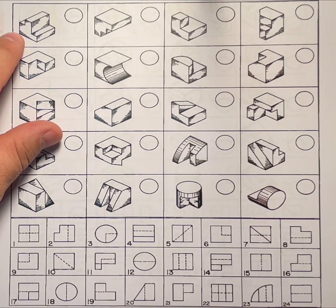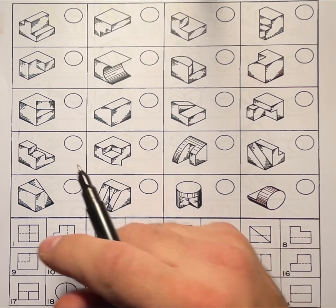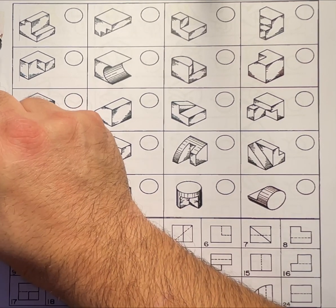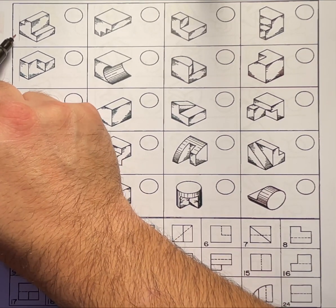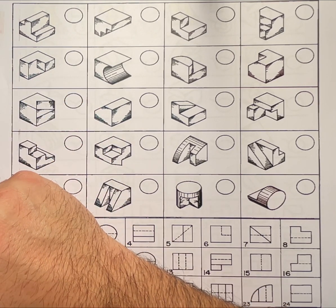So let's take a look at this first example. This first example we have to decide is the hidden line going to be in the front, in the top, or in the right side view.